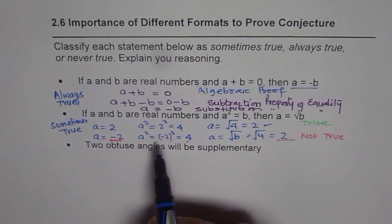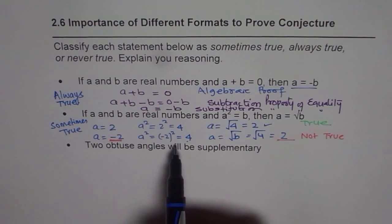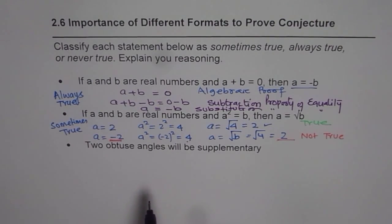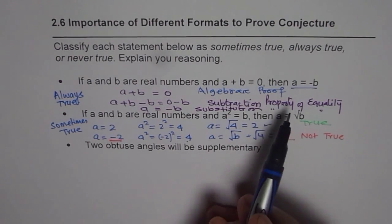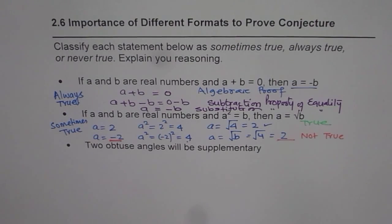As you can see, if A is a non-negative value, the statement is true, but not otherwise. So we classify this as sometimes true.